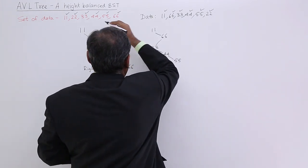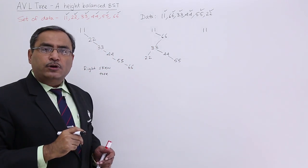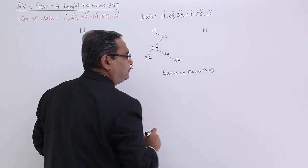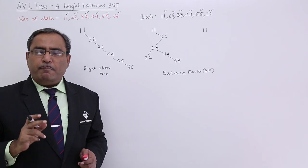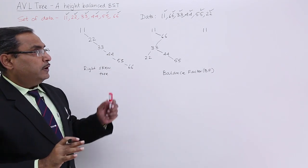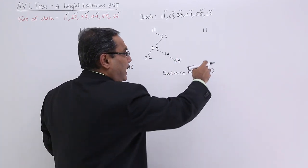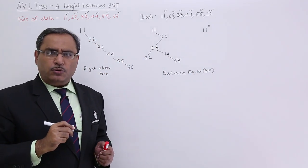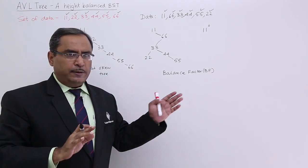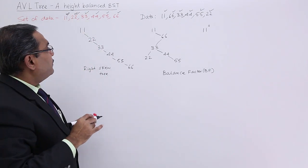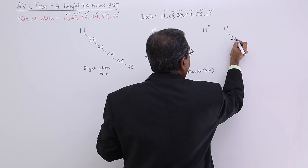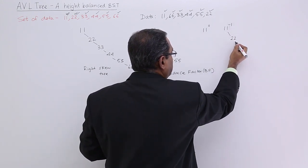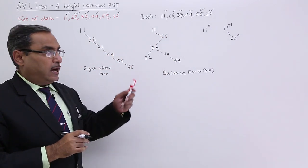So 11 will be taken first, and there I shall calculate one factor known as the balance factor, also known as BF in short. This balance factor means left subtree height minus right subtree height. For 11, the left subtree height is 0 and right subtree height is 0, so the balance factor will be 0. When the balance factor is 0, plus 1, or minus 1, we say it is height balanced. Now I shall go for insertion of 22 — its balance factor is 0 minus 1, which is minus 1, and the leaf node will have balance factor 0.